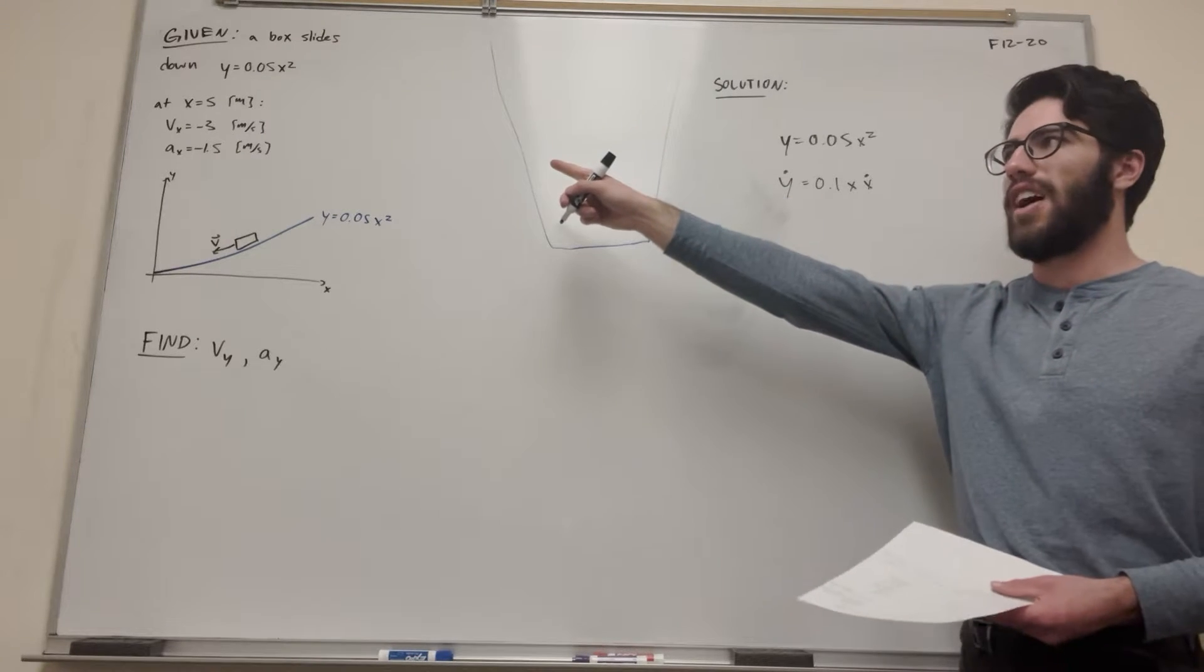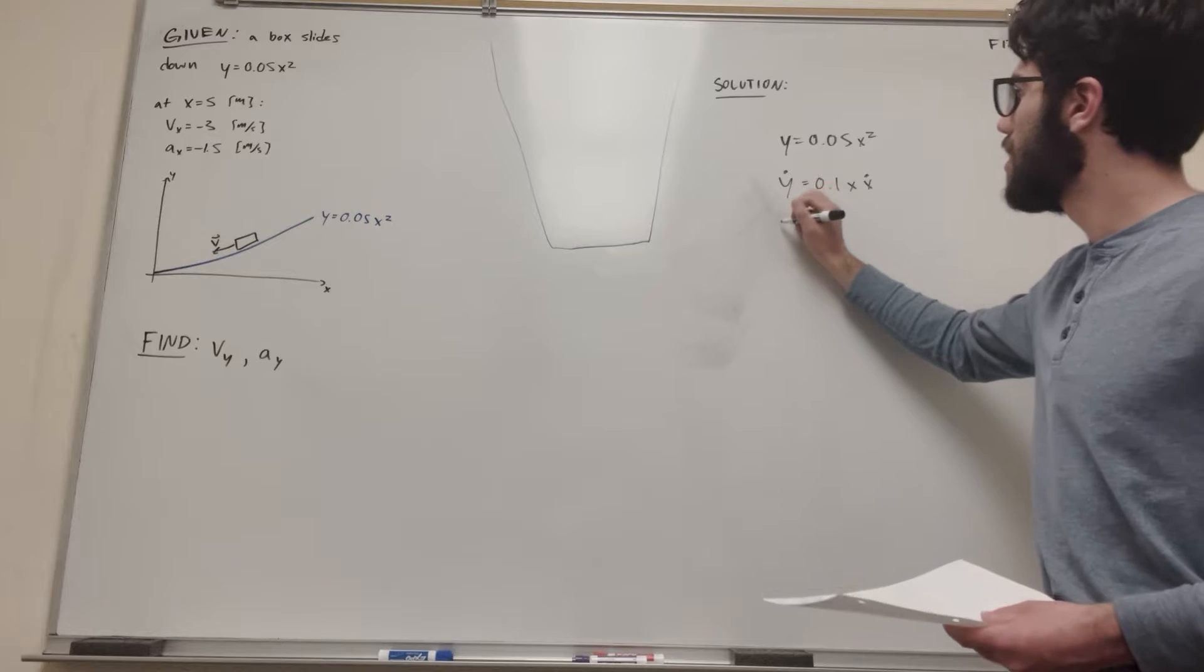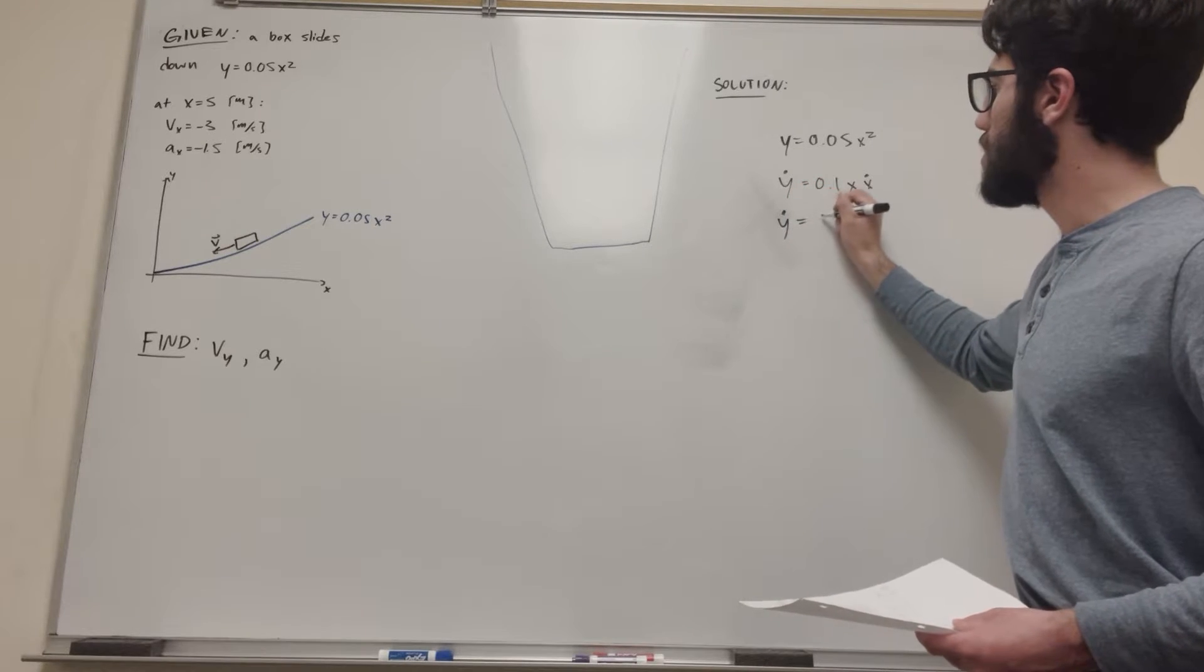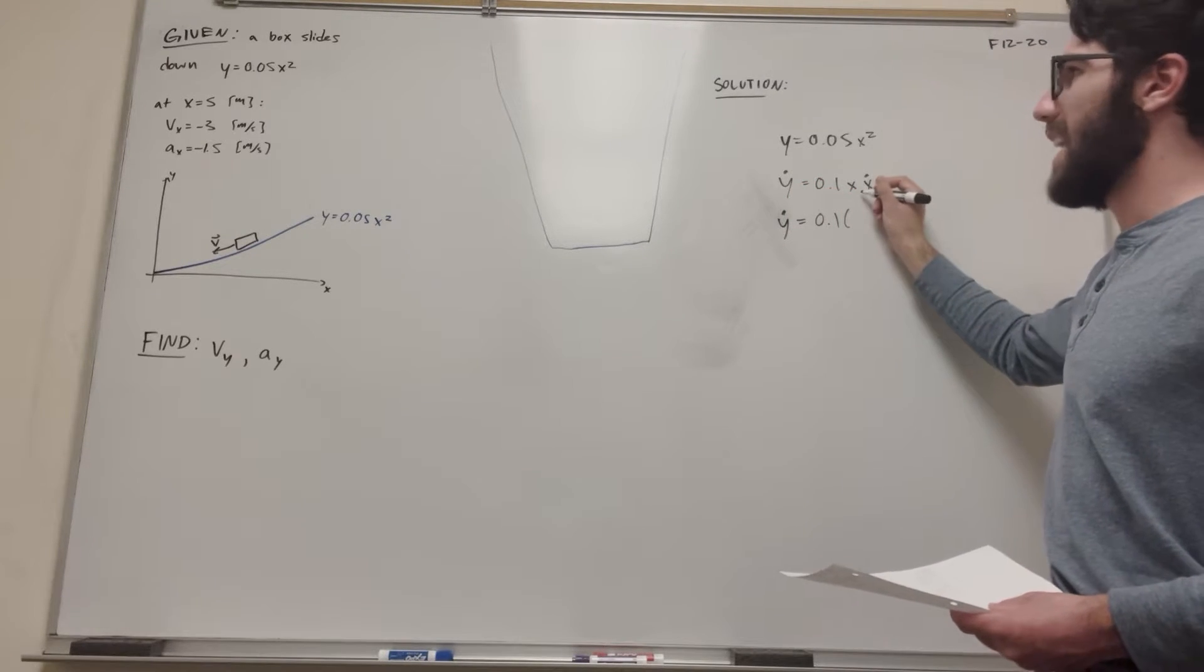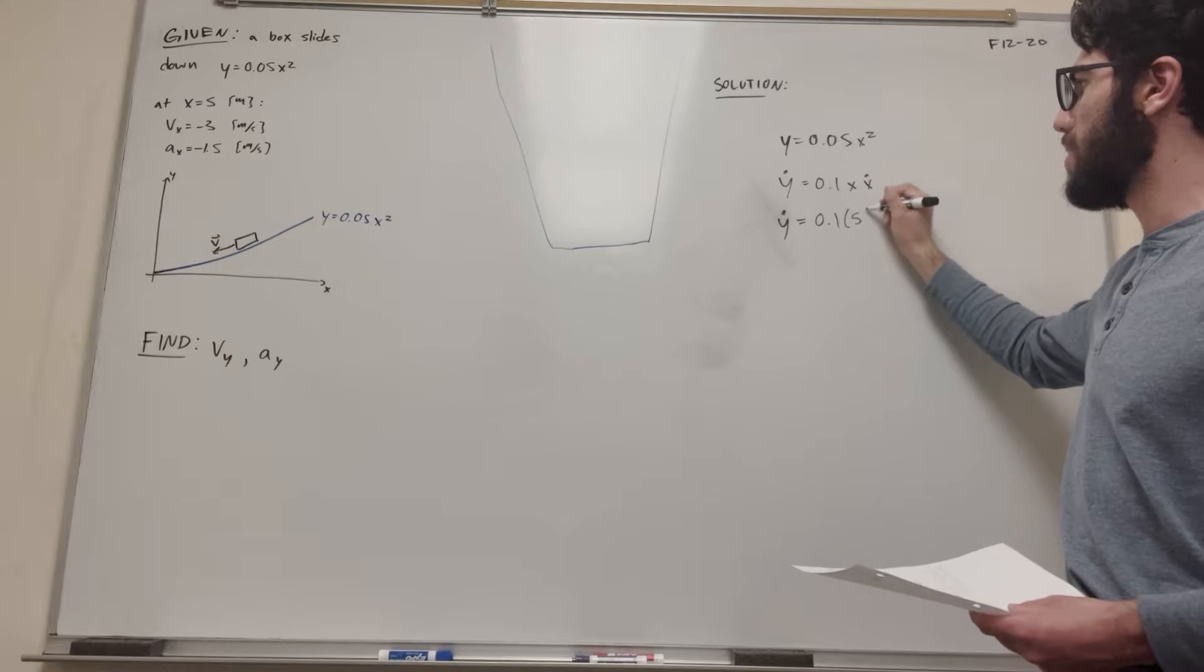So here it becomes our y dot equation. Now if we want to find out what happens at 5 meters, we just need to plug in what we know. So y dot is equal to 0.1, x is 5 meters, so we can just plug in a 5 there.